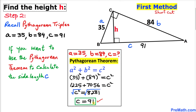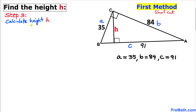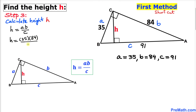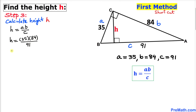Now let's calculate the height h using the formula: h equals a times b divided by c, where c is the hypotenuse. Applying the formula: h equals 35 times 84 divided by 91, which gives h approximately equal to 32.31 units.